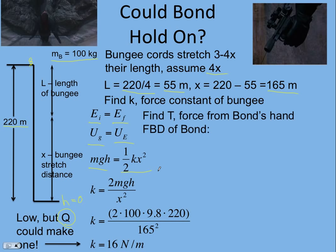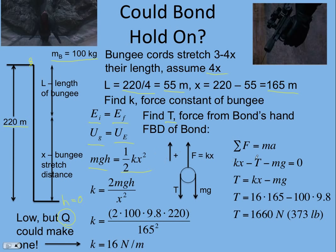Now we need to figure out the force — specifically the tension in Bond's arm where he's holding the gun. A free body diagram reveals there's the upward pull of the bungee, the downward tension in his arm, and also his weight. Assuming static equilibrium, which is reasonable if you watch the clip, we take up as positive and apply Newton's second law: sum of forces equals mA, and acceleration is zero. So the bungee force kx minus the tension minus the weight equals zero.